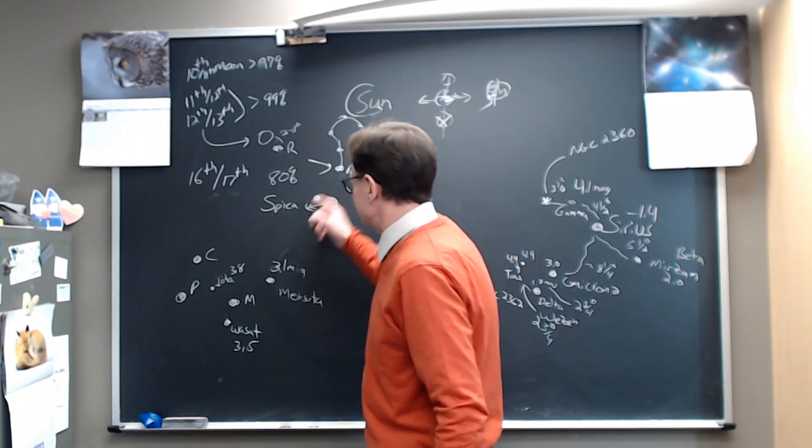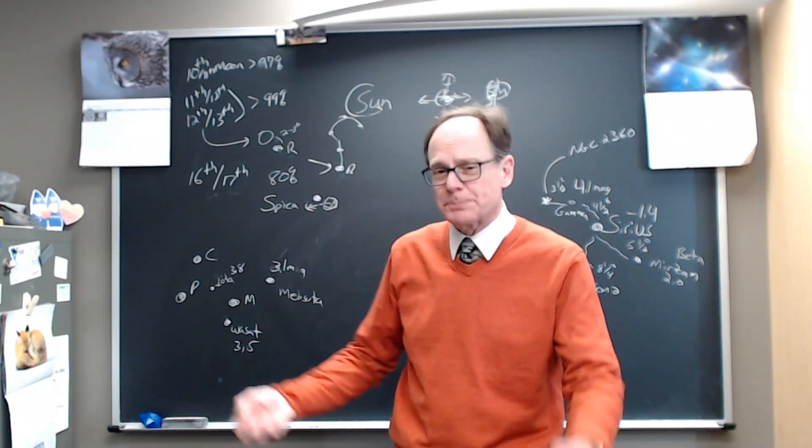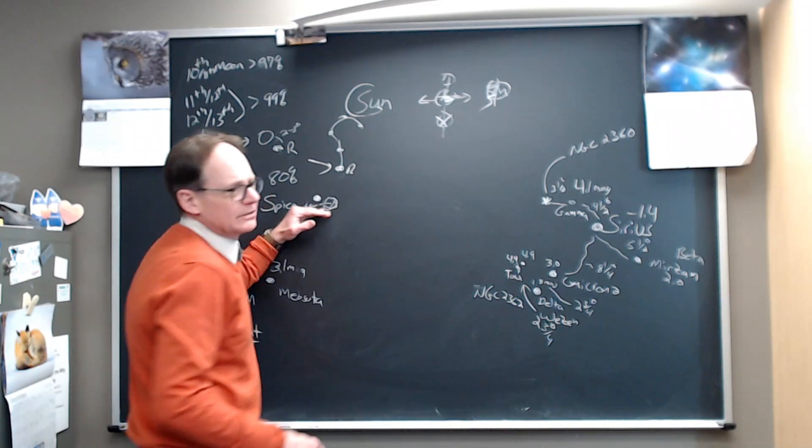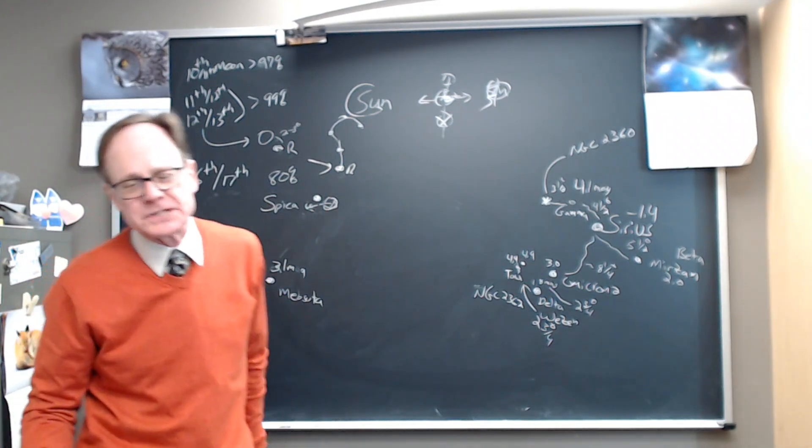It slides within a degree or so of Spica as it goes across there. So it gets pretty close to this bright star Spica and slides across below it there. Great night for watching this again. By the time we get to the end of the week, the moon's going to be about 80% full, so not quite as bad as it was for watching out other stuff earlier.